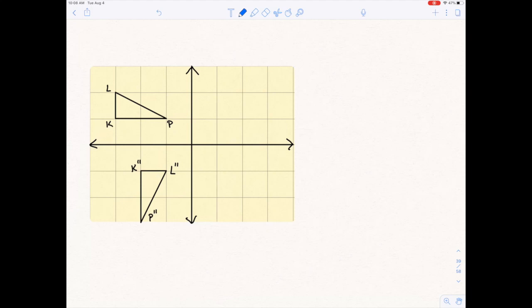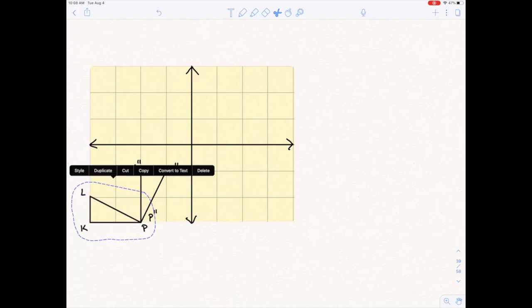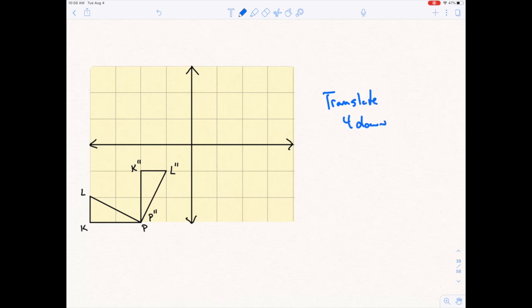Same task, just no directions. I want to prove that KLP is congruent to K double prime, L double prime, P double prime. I notice they are not touching. I think there's going to be a rotation here of some sort. I'd really like to get them touching if I could. I'm going to take and make my P point touch the P double prime. So I'm going to translate one, two, three, four down and one left. So translate four down and one left.